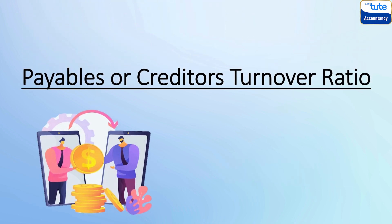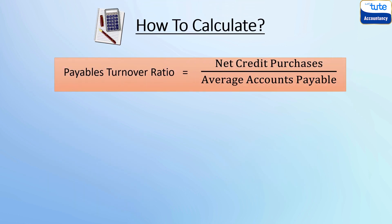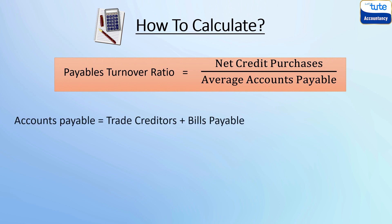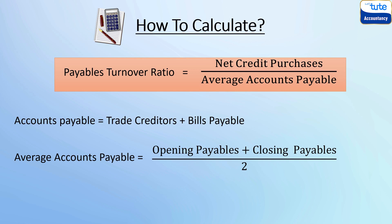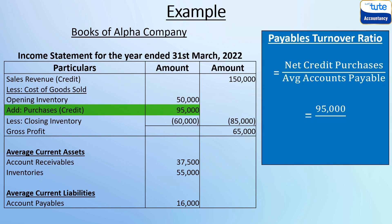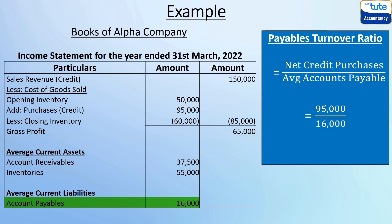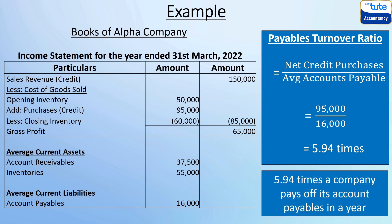Lastly, let's move on to payable turnover ratio, which is quite similar to receivables turnover ratio. It measures the number of times a company pays off its account payables in a year. The ratio is calculated by dividing net credit purchases by average account payables. Account payables include trade creditors and bills payable, and average account payable is the average of account payables at the beginning of the year and at the end of the year. Here in this example, credit purchases are 95,000 divided by average account payable given as 16,000, which gives us a payable turnover ratio of 5.94 times — denoting that 5.94 times a year the company pays off its account payable.